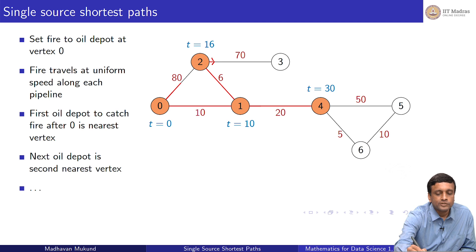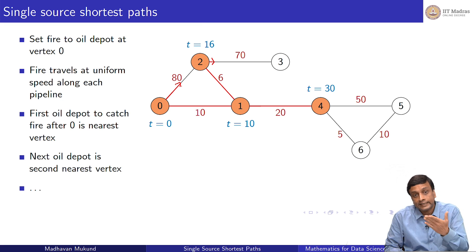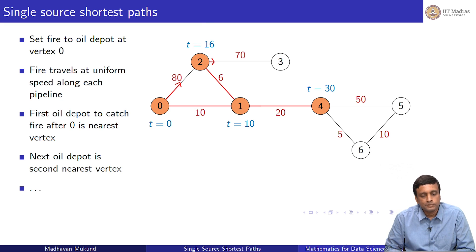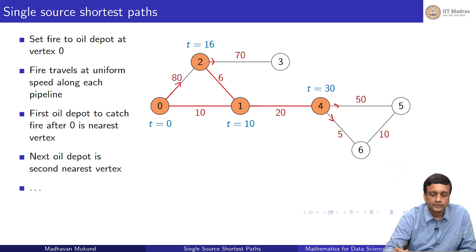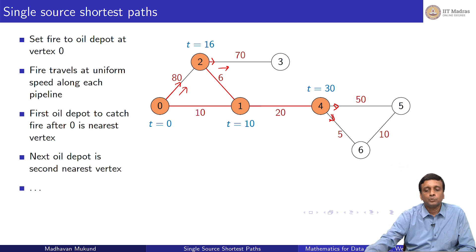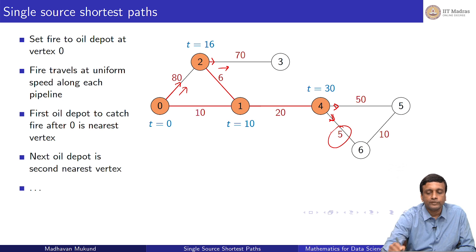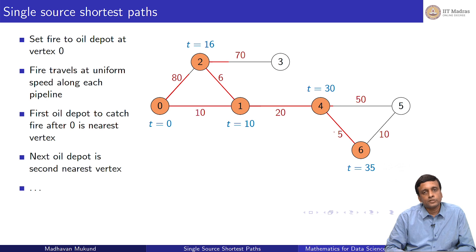When vertex 4 burns, the fire from 2 has started moving towards 3. The fire from 0 to 2 has reached about 3/8 of the way. Now, fire from 4 starts going in two new directions. Since this edge is only 5 units, in 5 more units of time the fire from 4 will reach vertex 6. So at t equals 35, vertex 6 is going to burn.